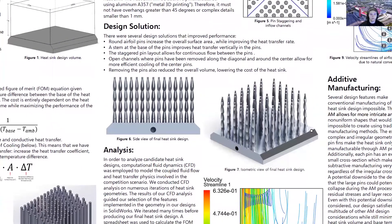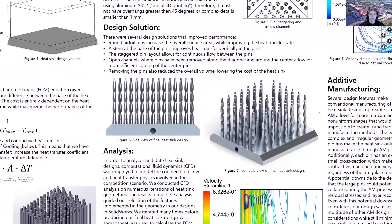Our final design was based off many design principles previously outlined. We went through multiple design iterations with the intent to improve the previous iteration. Some key iterations that we implemented were round airfoil pins, a stem at the base of the pins, staggering of the pins, as well as implementing air channels within the heatsink. These combined modifications allowed for improved performance and reduced the overall volume of the heatsink.